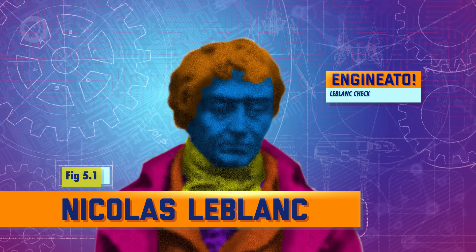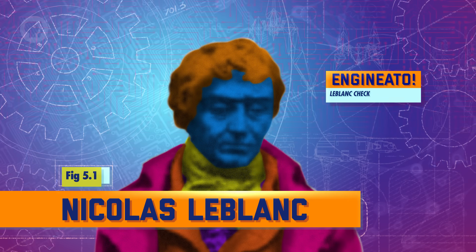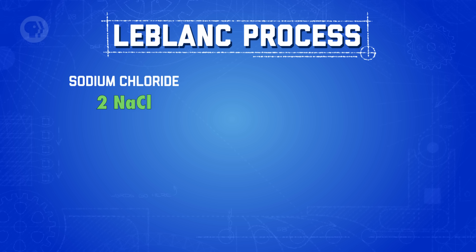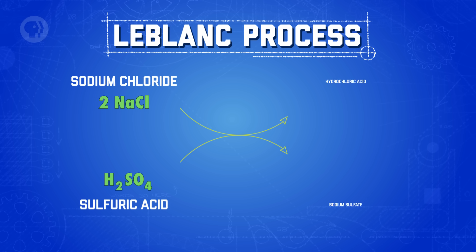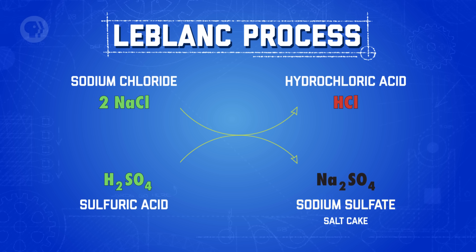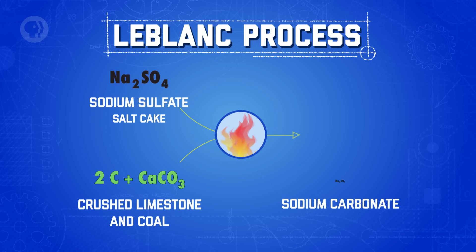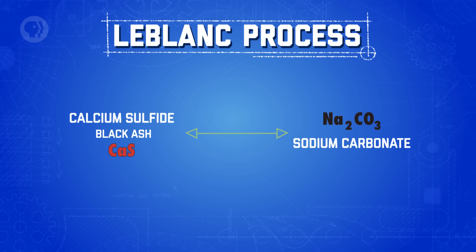Since France couldn't get sodium carbonate from its normal trade routes, the French Royal Academy offered up a prize in 1775 to anyone who could make sodium carbonate from sodium chloride, which we know as common salt. It took about 15 years, but a French chemist and physician named Nicolas Leblanc finally figured out how to do it around 1789. His method, now known as the Leblanc Process, first heated sodium chloride with sulfuric acid to produce sodium sulfate — called the salt cake. The salt cake was then mixed with crushed limestone and coal and fired, leaving a combination of sodium carbonate and calcium sulfide, also known as black ash. The final step separated the sodium carbonate from the black ash by washing it with water, which was then evaporated. We call this extraction process lixiviation.